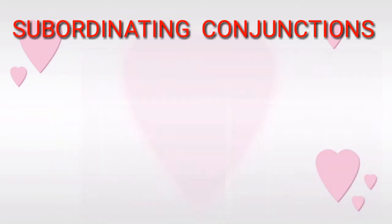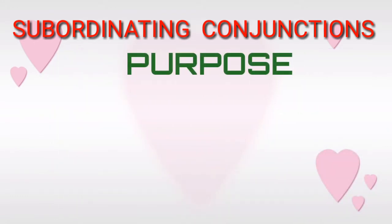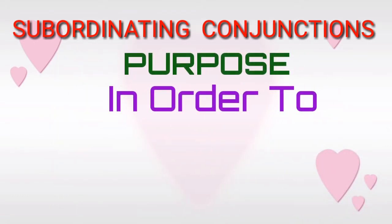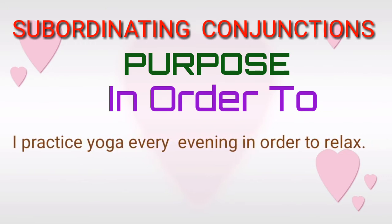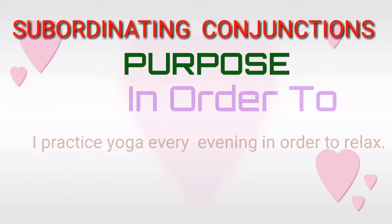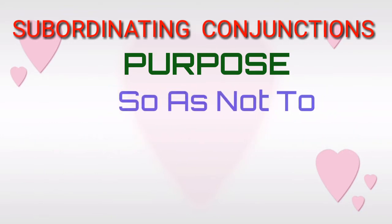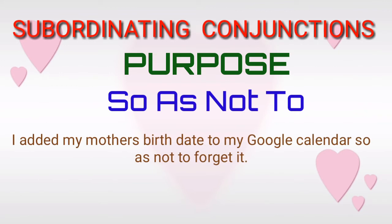Subordinating conjunctions of purpose — 'in order to.' For example: 'I practice yoga every evening in order to relax.' Subordinating conjunctions of purpose — 'so as not to.' For example: 'I added my mother's birth date to my Google Calendar so as not to forget it.'